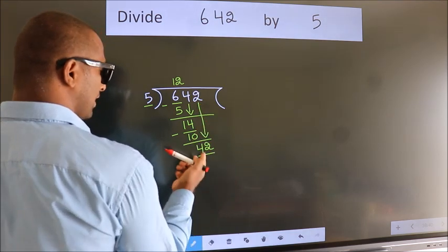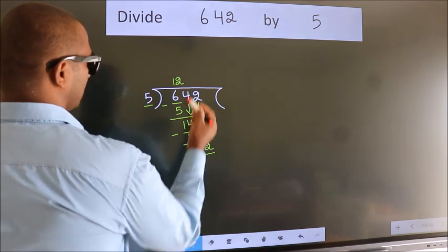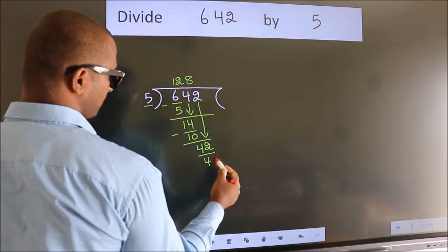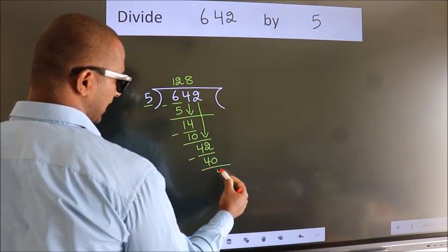So, 42. A number close to 42 in 5 table is 5 8s 40. Now, we subtract. We get 2.